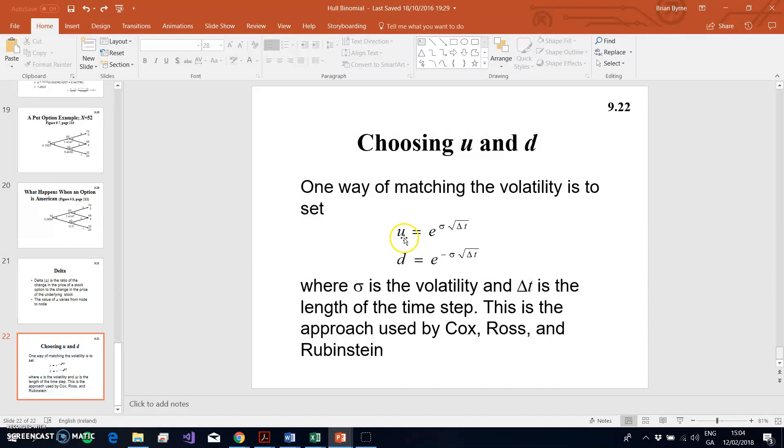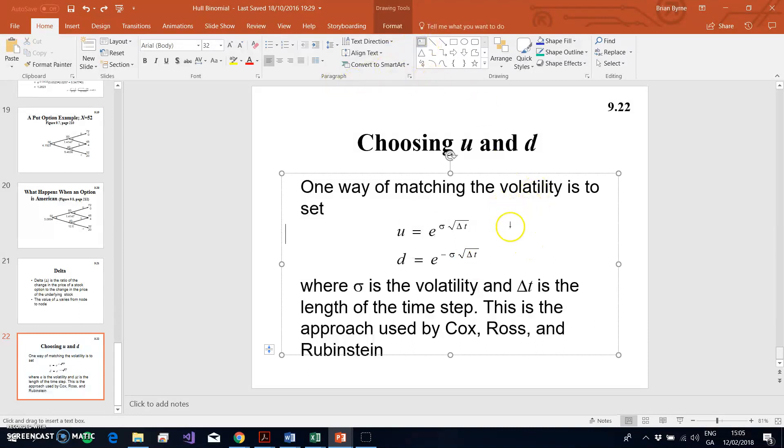Where u was the percentage increase and d was the percentage decrease. Cox, Ross, Rubenstein proposed that u would be equal to... or d would be equal to 1 divided by u, which is not quite the same thing.